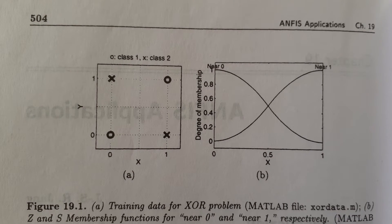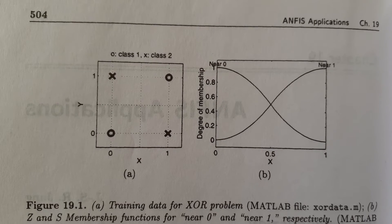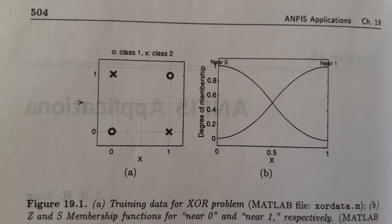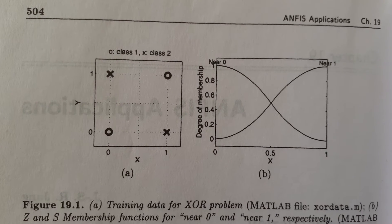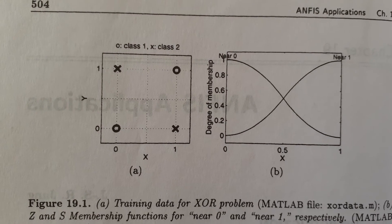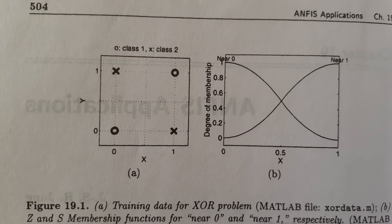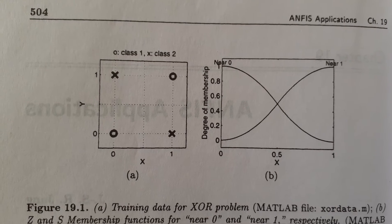If we take x, y is near 0, 1 to mean that x is near 0 and y is near 1, then all we need to do is assign an appropriate operator to AND. The most popular fuzzy AND operators are product and min.